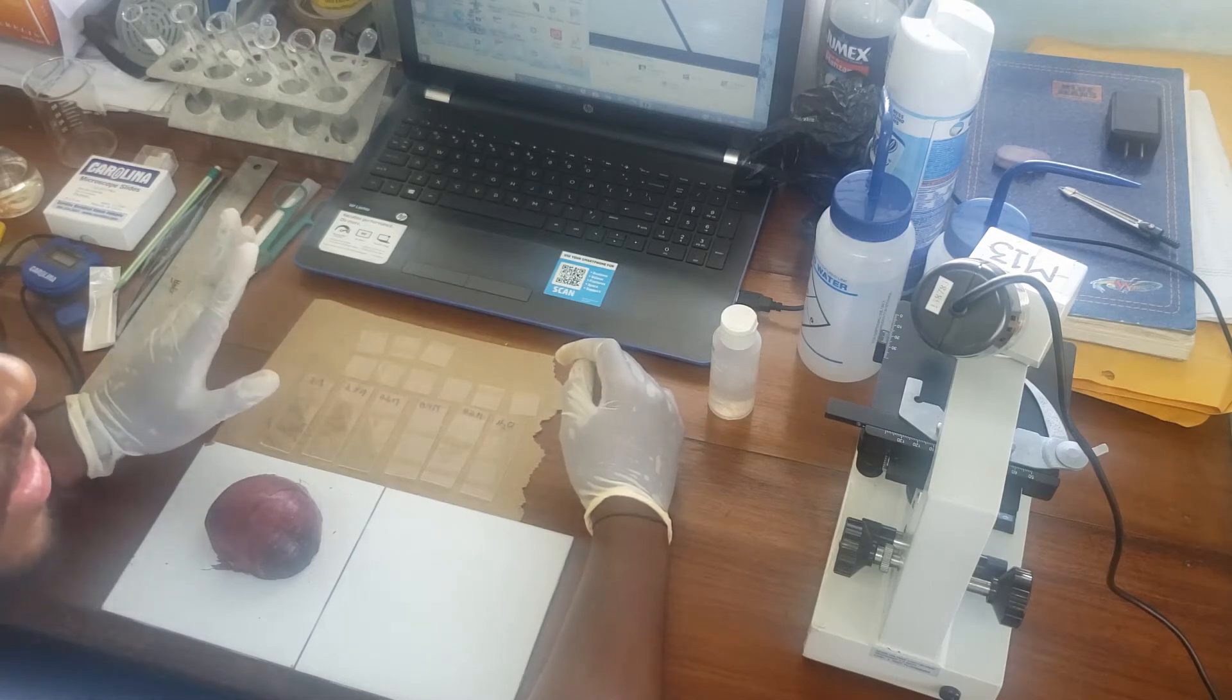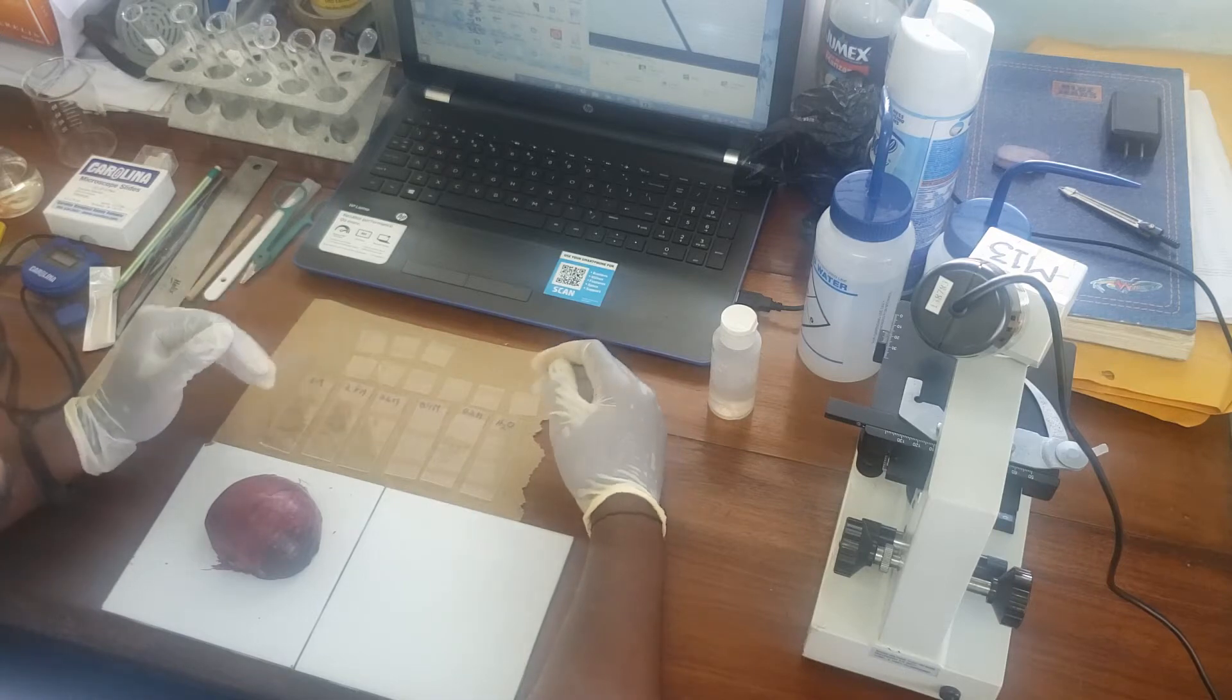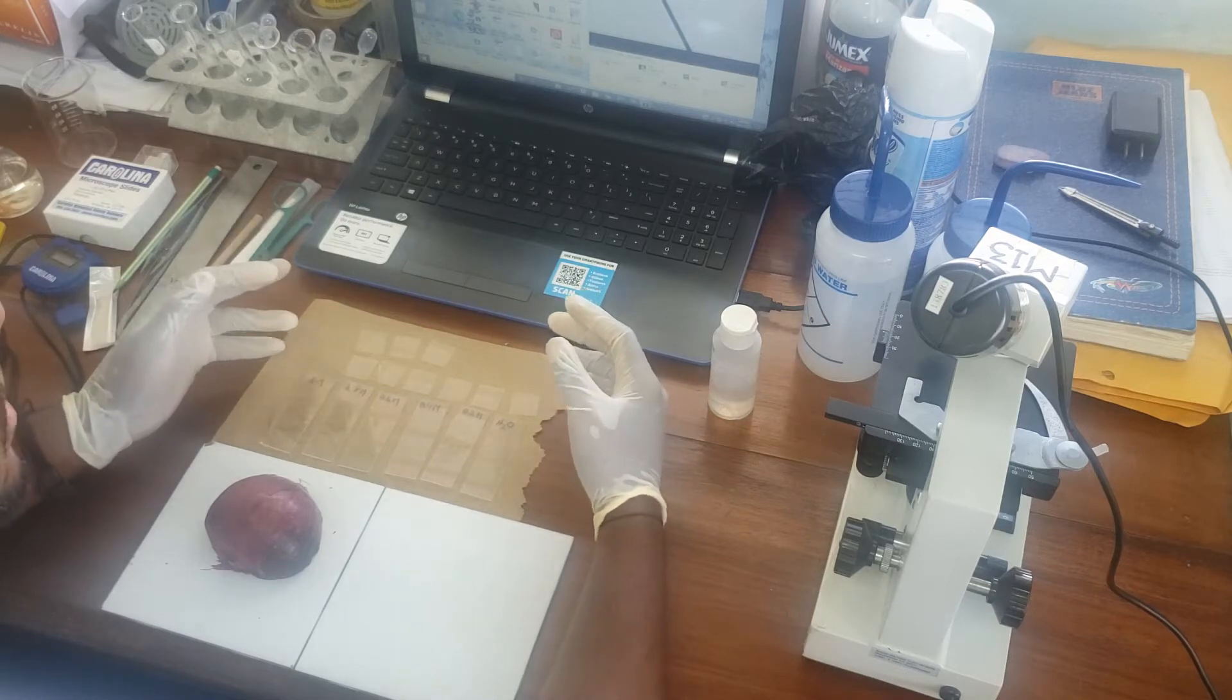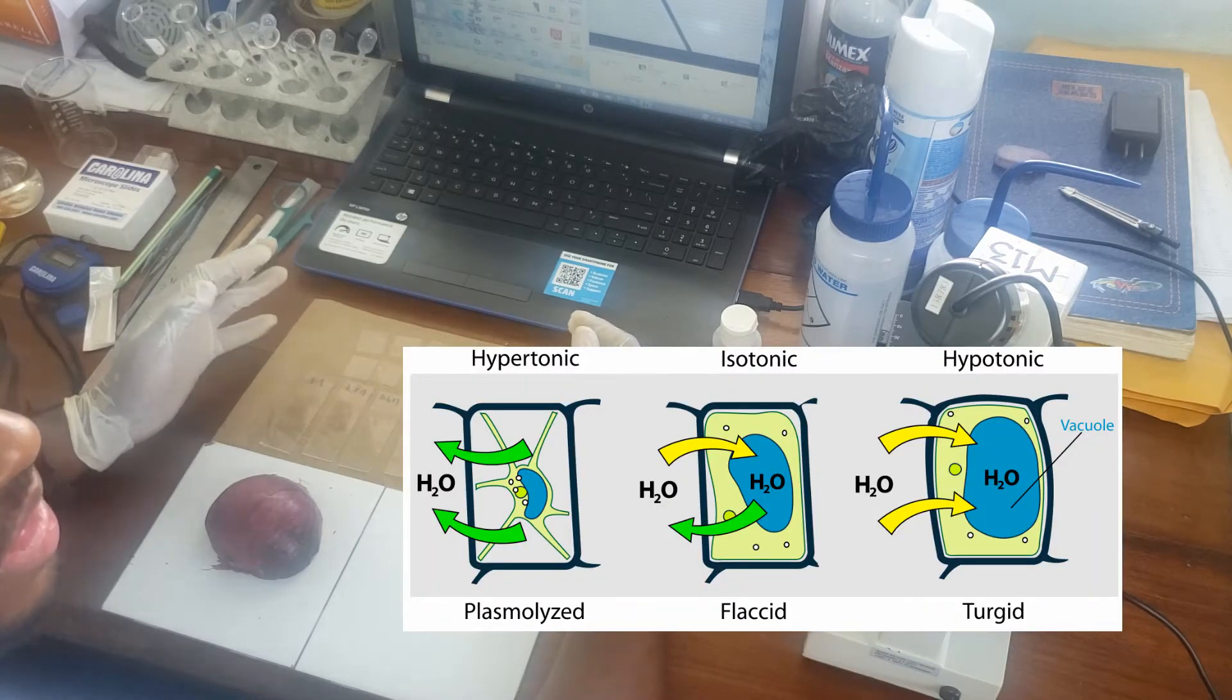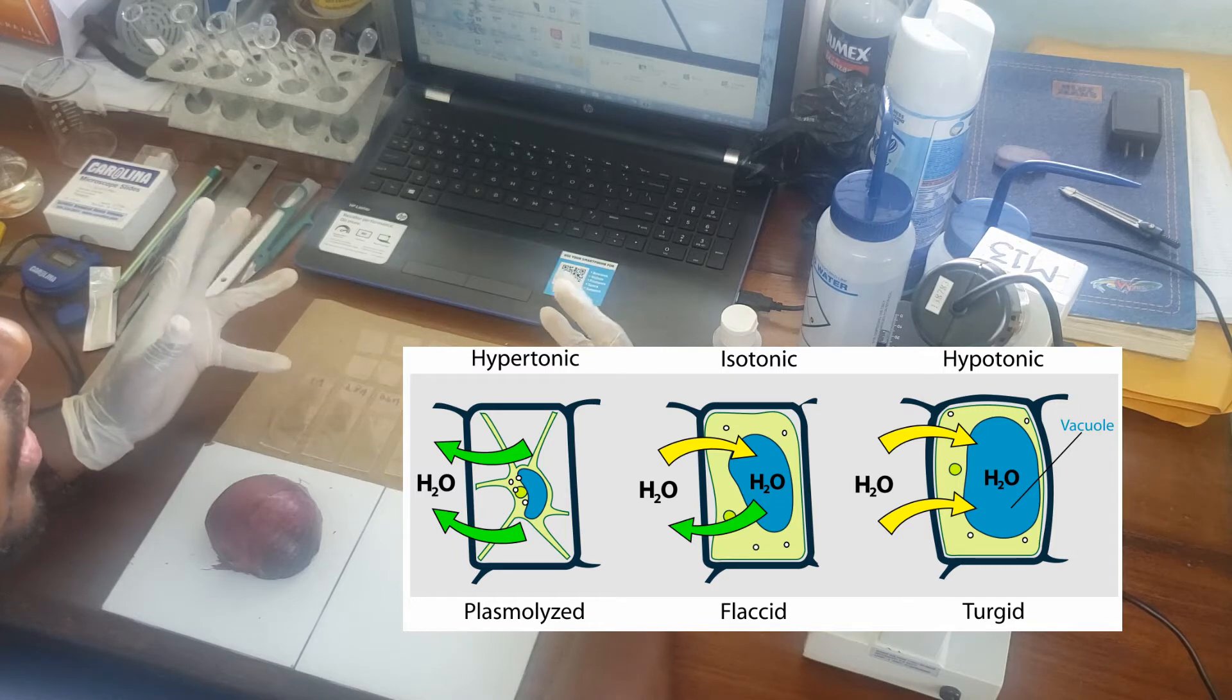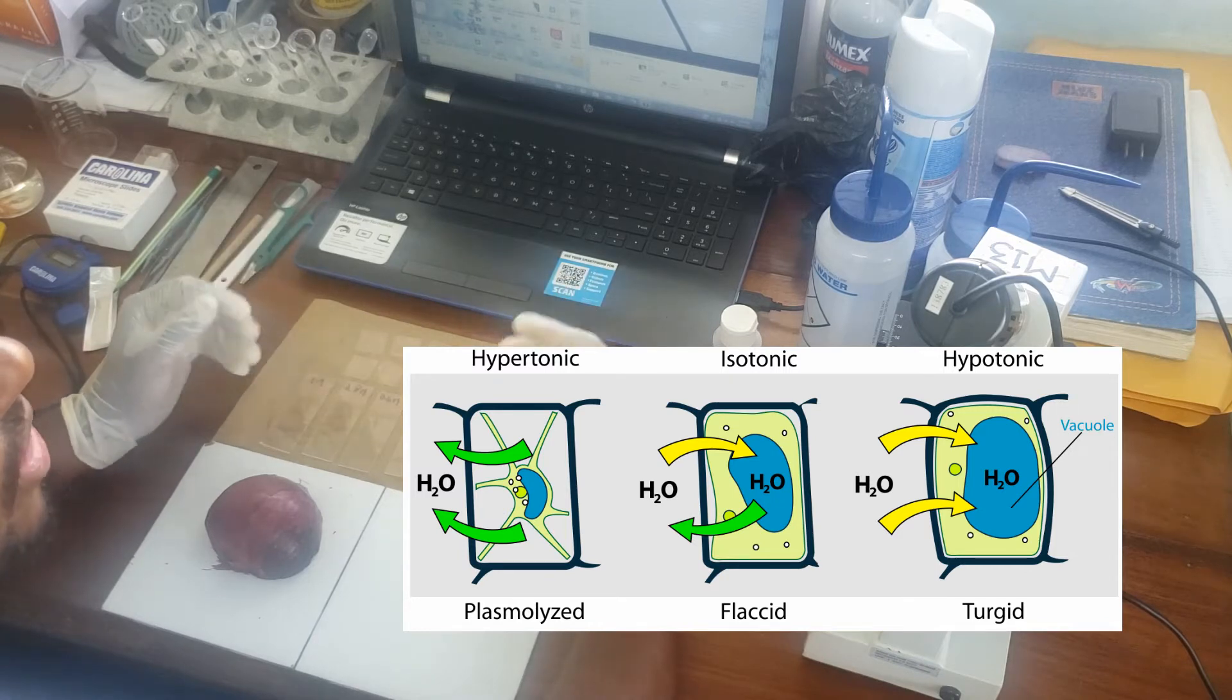Now there are three major types of solution that can affect the way the cell reacts. The first is an isotonic solution, which is where the cell has the same concentration of water inside the cell itself as the surrounding.